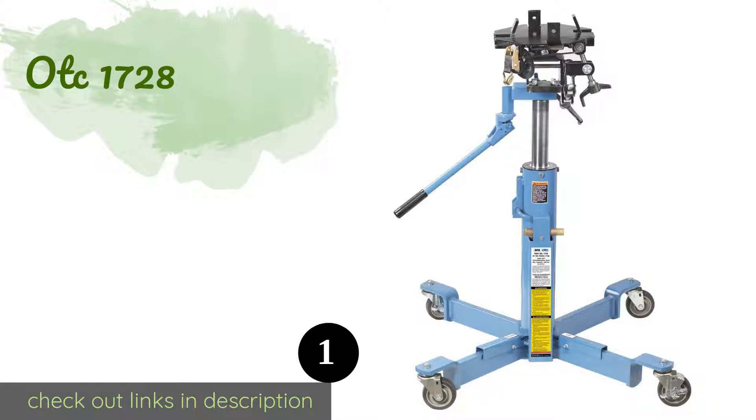The first product on our list is OTC 1728. A two-stage design means the OTC 1728 can take advantage of compressed air for the initial lifting and precise manual hydraulic actuation for the final push. 50 degrees of forward tilt helps make this one of the most versatile for working on high performance machines. This product is available on Amazon for $2,576.